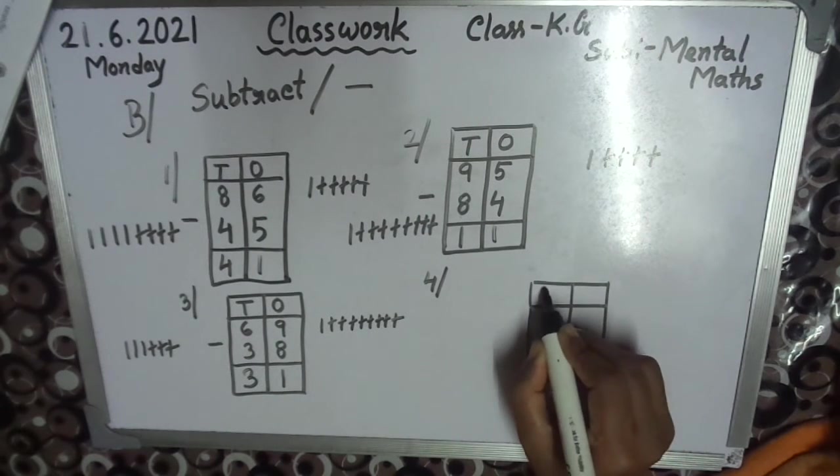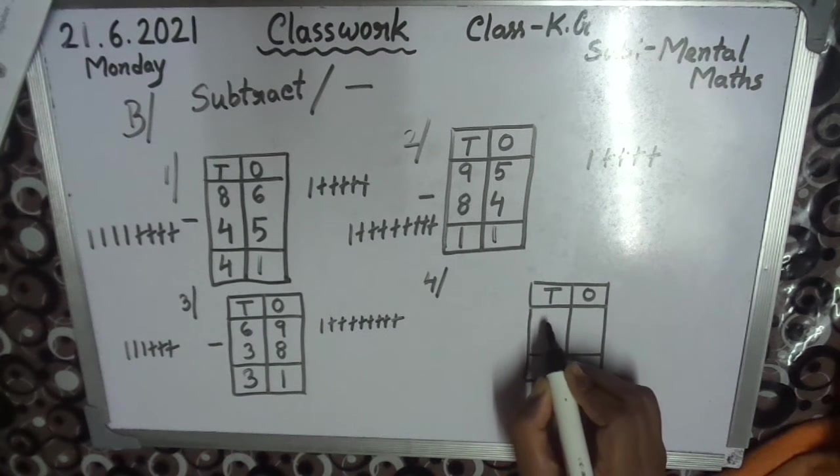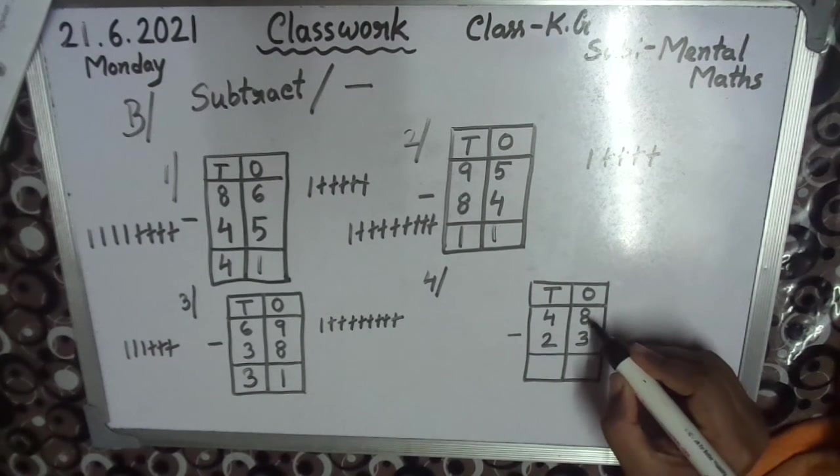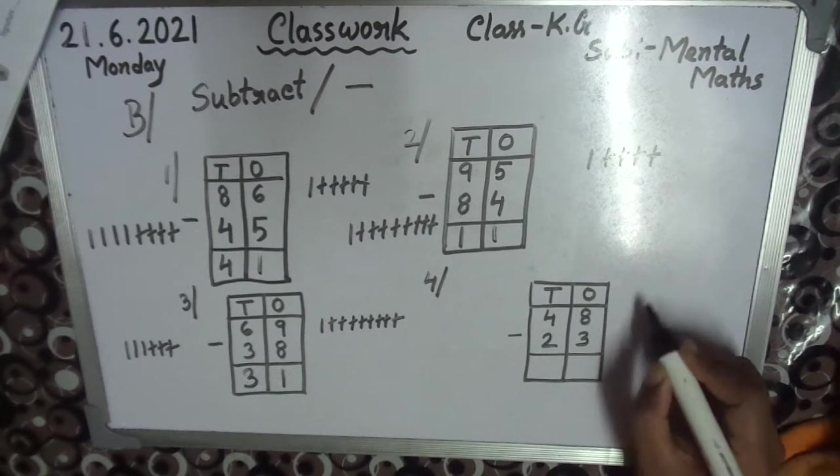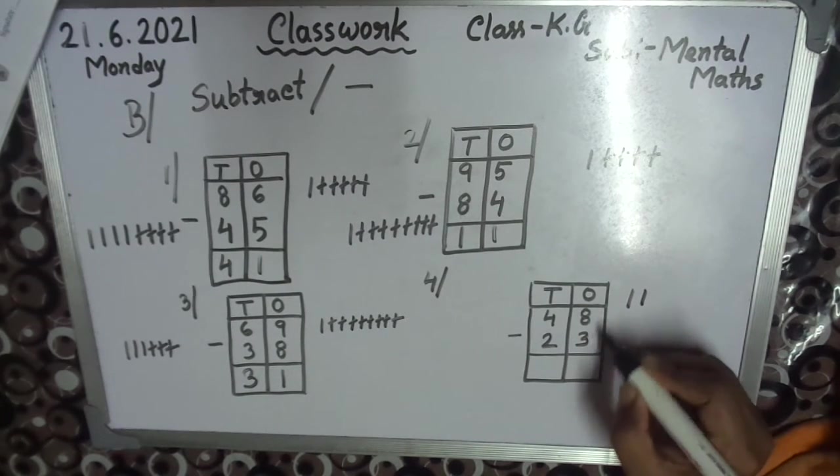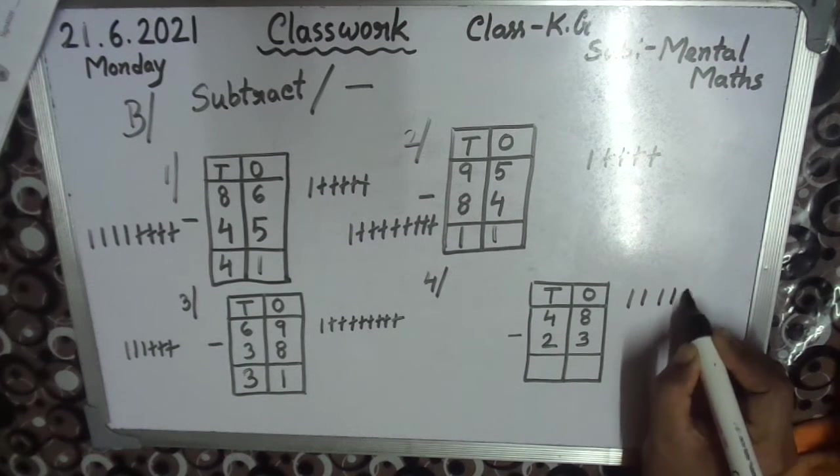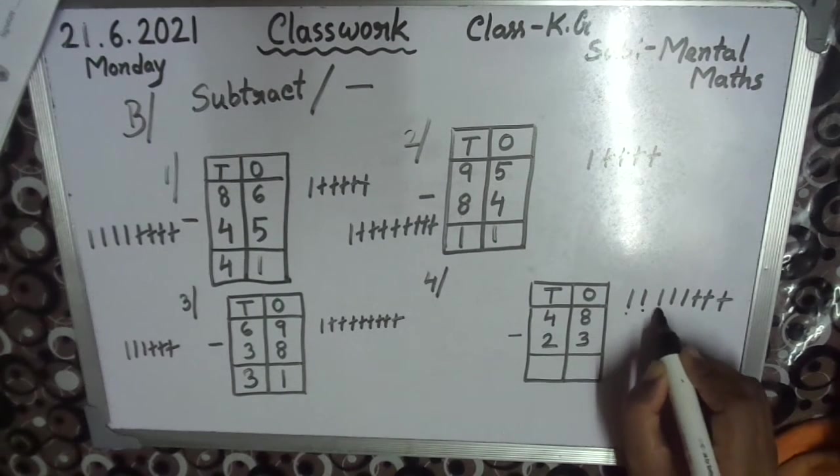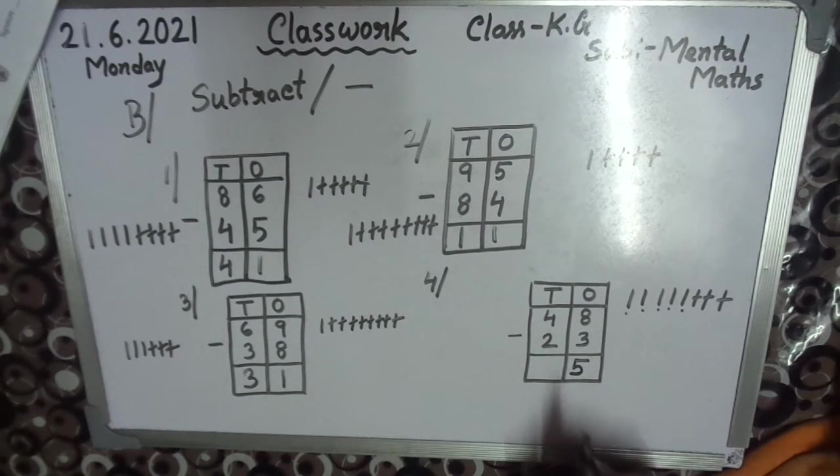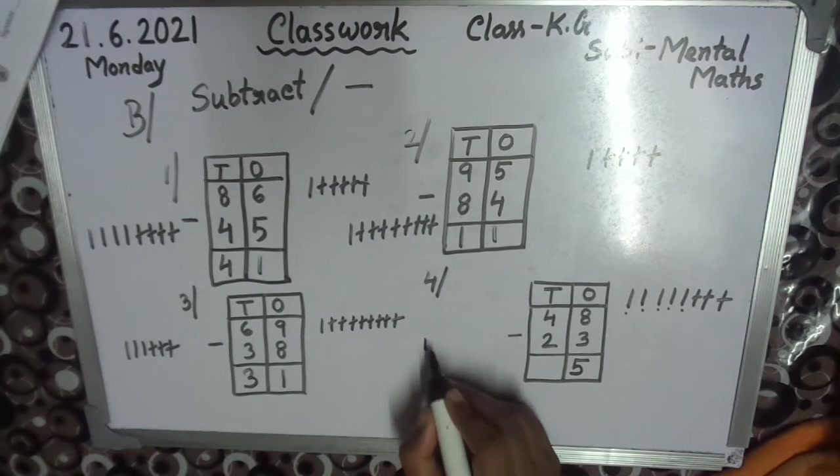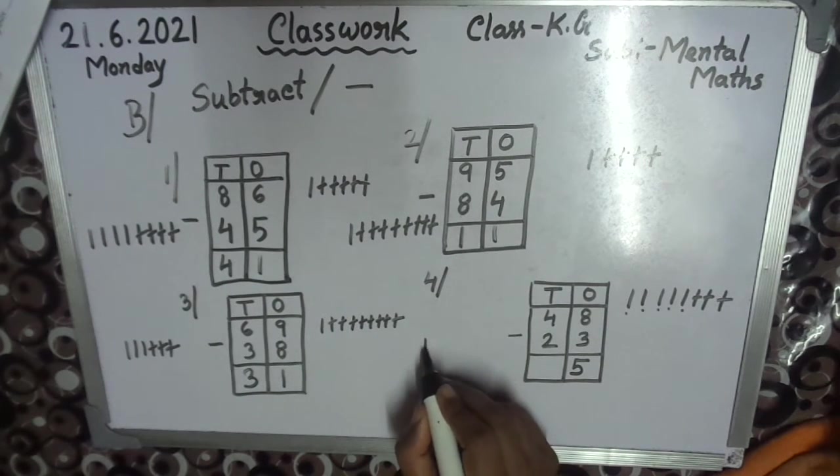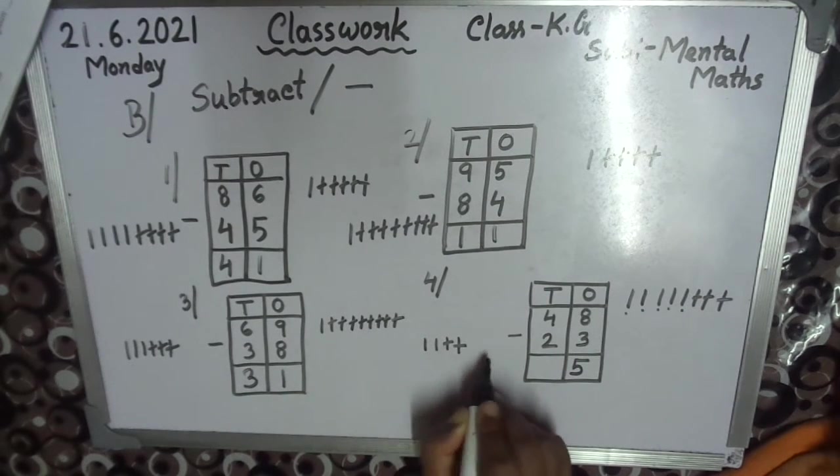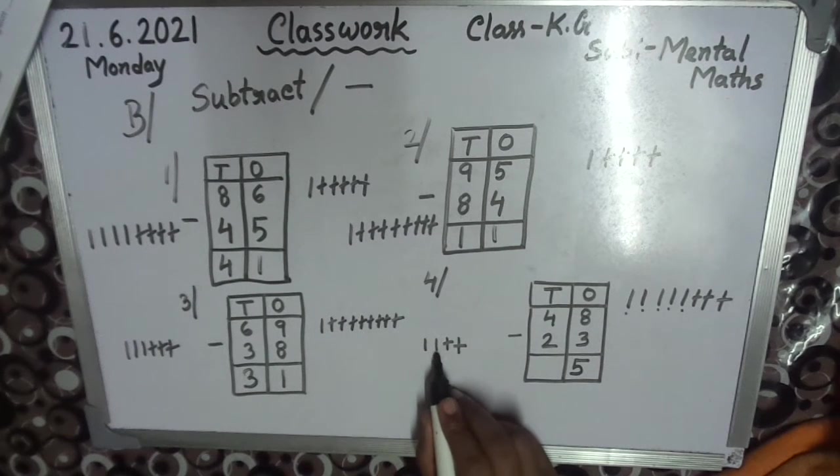Next 4. Write tens, ones. Question is 48-23, minus. 8 big number than 3. 8: 1, 2, 3, 4, 5, 6, 7, 8. 3: 1, 2, 3, so left count 1, 2, 3, 4, 5. So write 5. It's very easy, practice in your home. Left 1, 2.